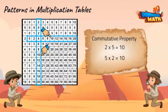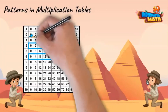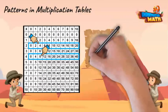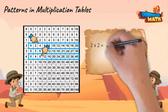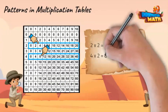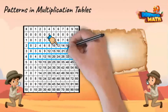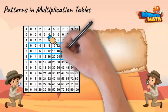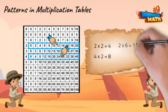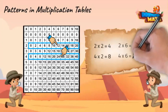One more pattern. What do you notice about the multiples of two and four? Two times two equals four and four times two equals eight. The multiples of four are double the multiples of two. Here is another example: two times six equals 12, and four times six is double 12, which is 24.